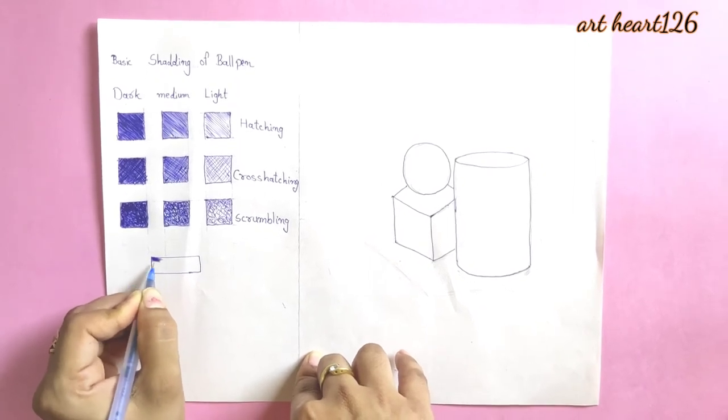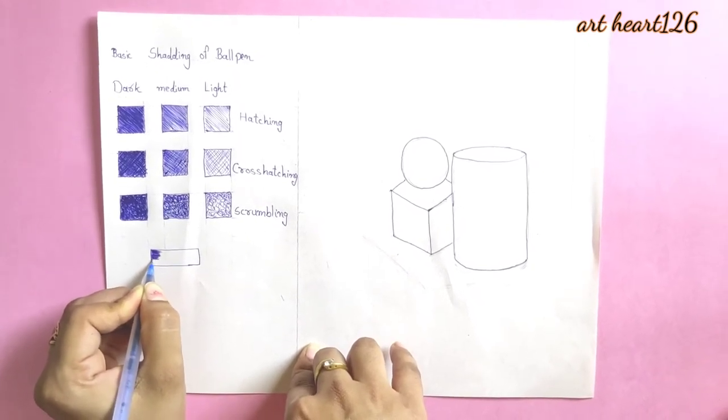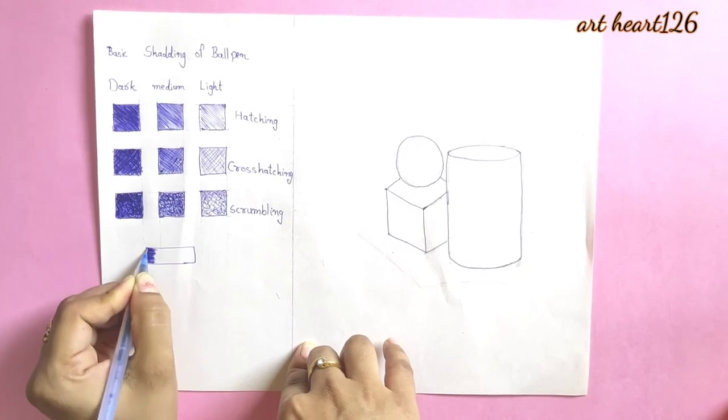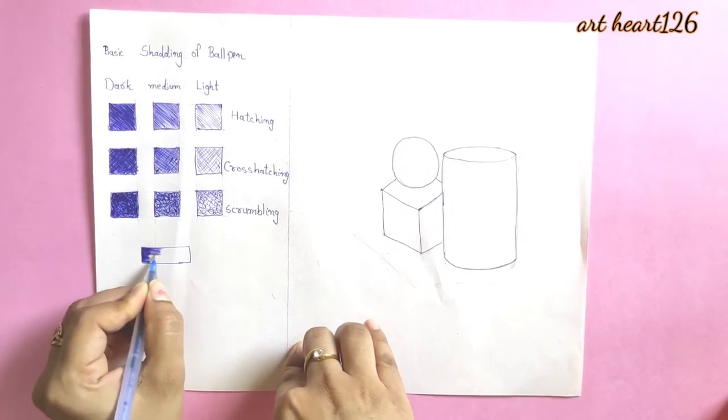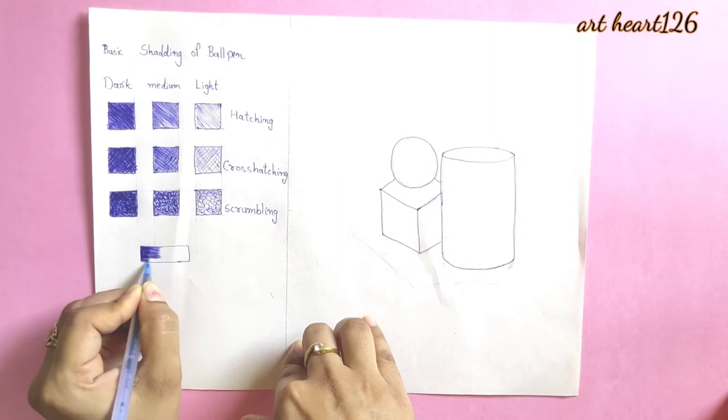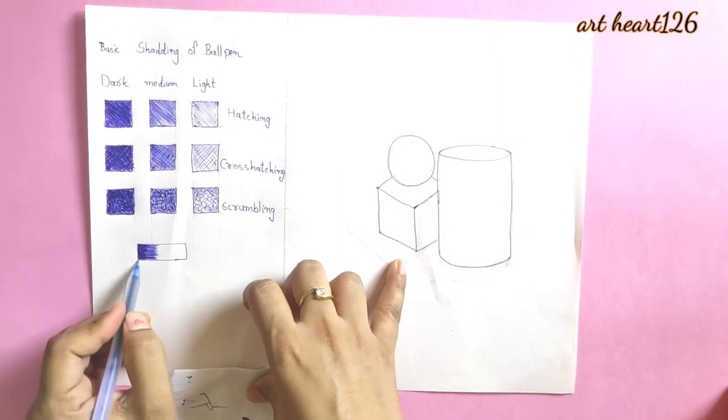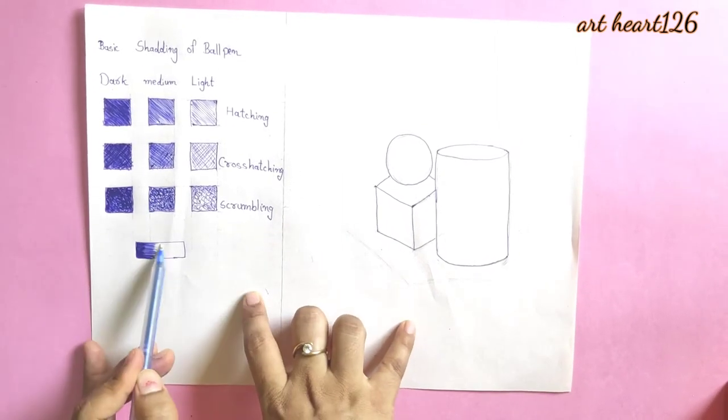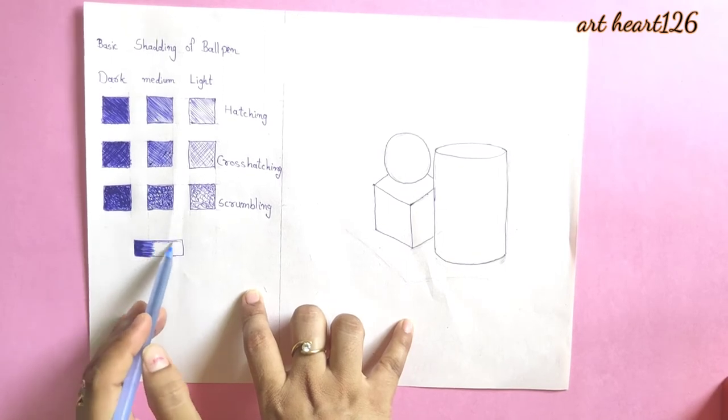This is a smooth ballpoint pen work. Draw dark tone then light tone. While doing light tone, hold the ballpen from the top side so pressure would be low.